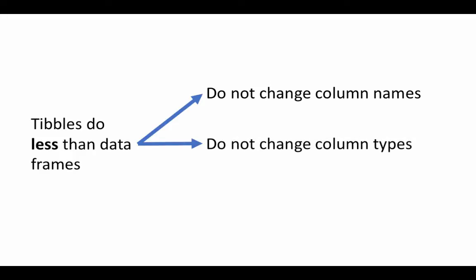Tibbles do not change the column types. When you read character data in data frames with read.csv, character data are automatically converted into factors. Tibbles do not do anything like that. When you read character data from a file, tibbles would just treat them as character data, and we can then convert what we want into factors. So there is less unpredictability with tibbles.